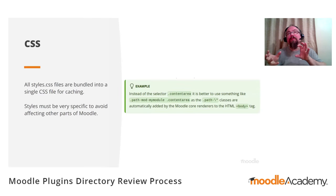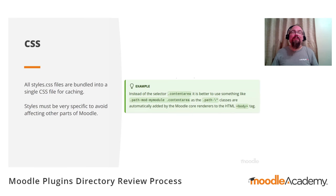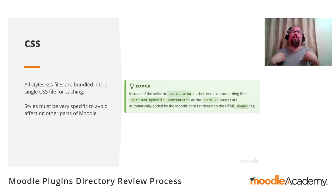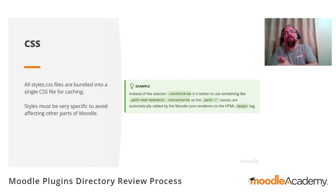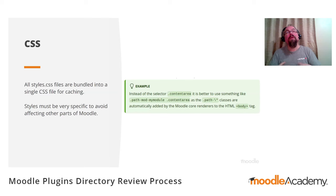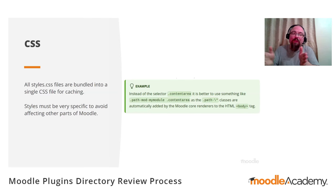Regarding CSS: Moodle takes the styles.css file from all plugins on the site and bundles them into one file. That means the rules inside that CSS can apply to any area of the Moodle site. Moodle helpfully auto-creates tags within the page depending on its path, which can help scope CSS rules. For example, path-mod-mymodule would be added to the beginning of a rule applying to a plugin at path mod/mymodule. If a developer just puts a generic rule like content-area in their CSS and makes it bold, all content areas across the entire Moodle site would be bold — which we don't want.